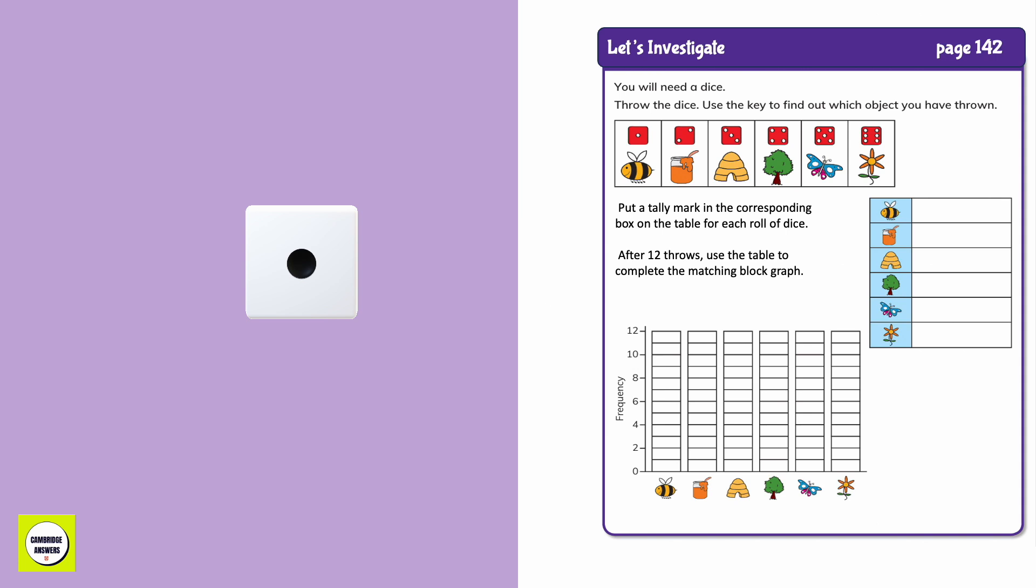Let's roll the dice. 3. I am going to put a tally mark right next to the beehive as I have rolled a 3.